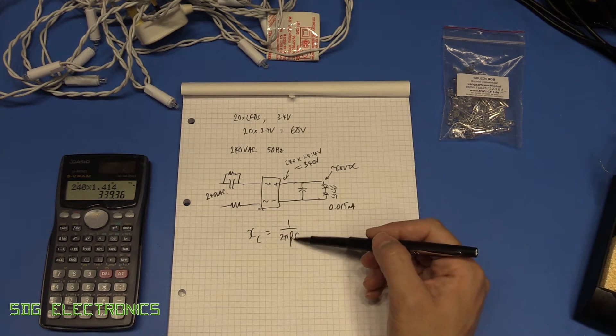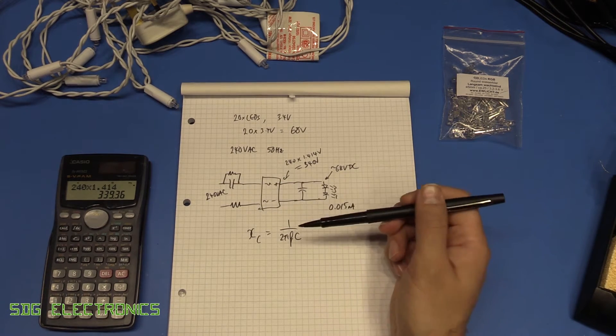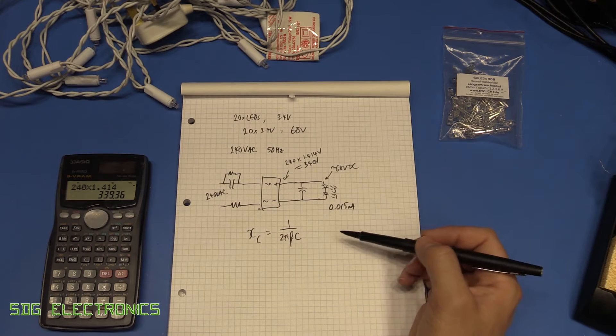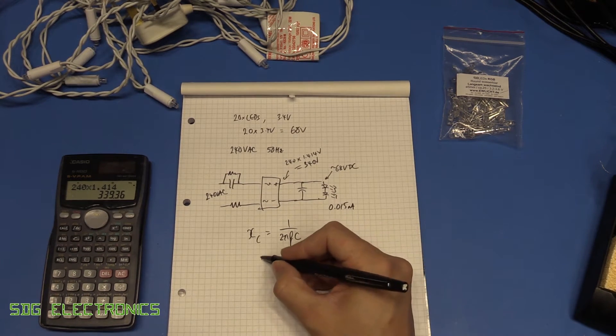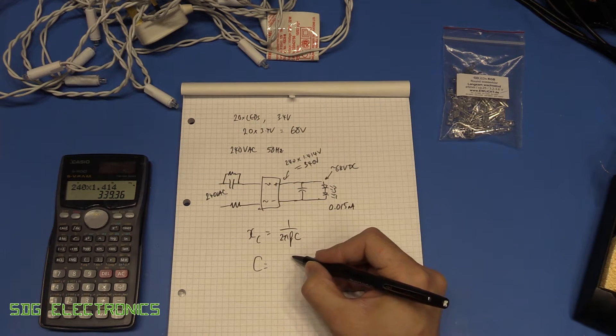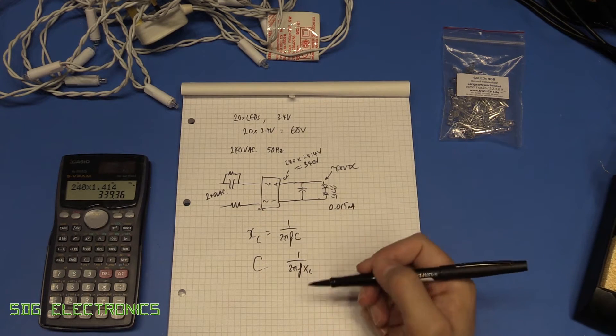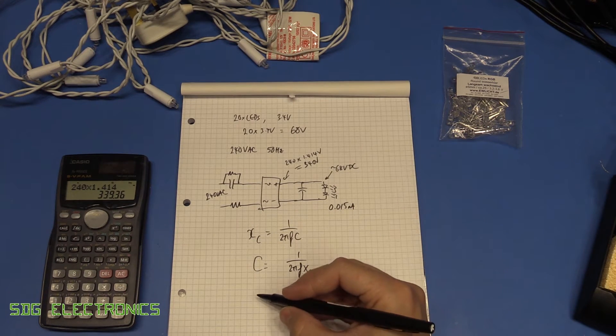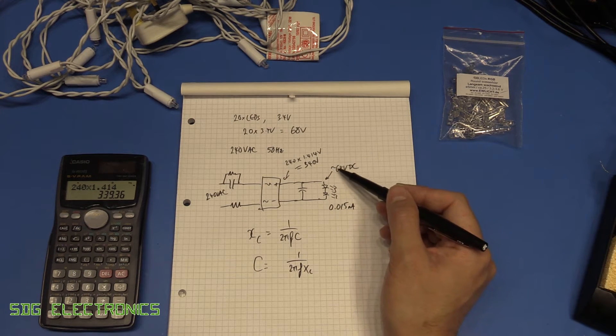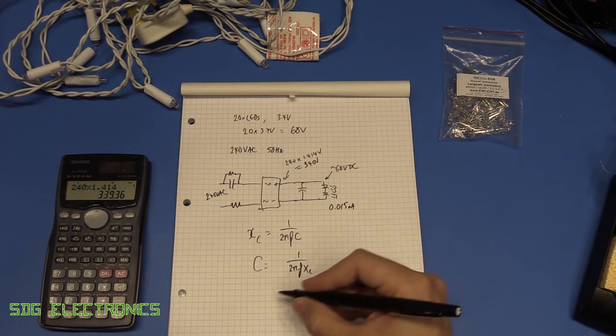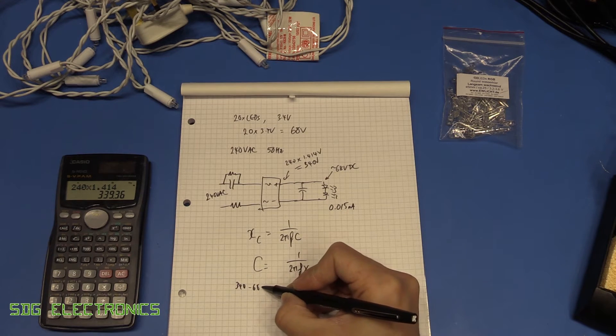So what we want to do is create a current limiting circuit using the AC properties of this capacitor. We know that the impedance of this capacitor is equal to 1 over 2πfc. So as the frequency goes up, the impedance changes. Obviously at DC, which is zero, you don't normally get any current flowing through the capacitor once it's fully charged. And then as the frequency increases, the impedance goes down. So we can rearrange that to give us C, which is 1 over 2πfXc. We know that we've got 340 volts input and our LEDs are going to drop somewhere in the region of 68 volts. So our capacitor roughly needs to drop 340 minus 68, which is about 272 volts.